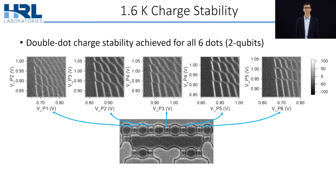Here is an example of a six-dot device where we can tune to one electron in each dot. We show the double dot charge stability diagrams corresponding to each exchange gate in between each pair of dots.